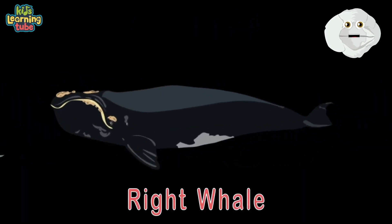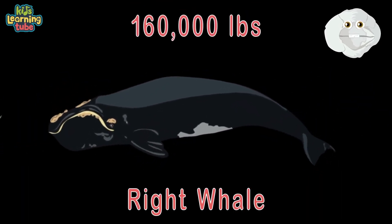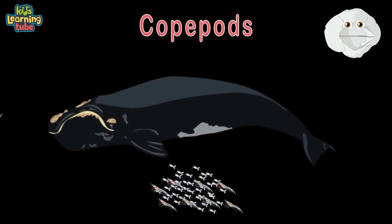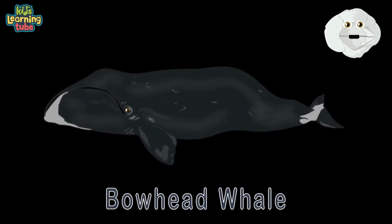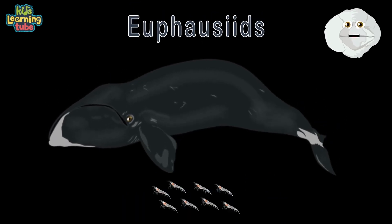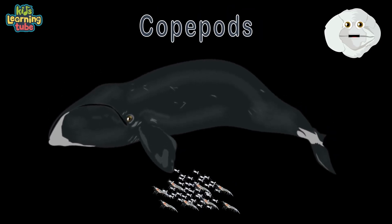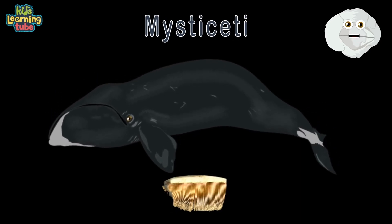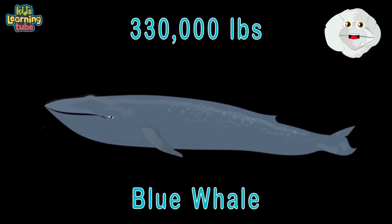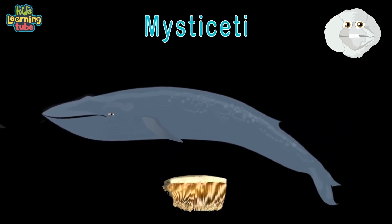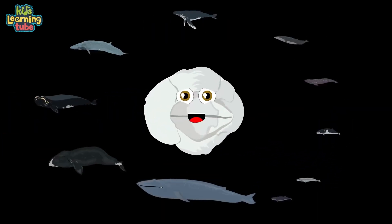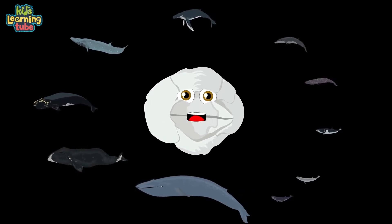Here's the right whale — fifty-nine feet long and 160,000 pounds. They feed on euphausiids and copepods, filtering through baleen as Mysticeti. Here's a bowhead whale — fifty-nine feet, 220,000 pounds — with euphausiids and copepods as their main diet. The blue whale is one hundred feet long, 330,000 pounds, eating four tons of krill daily. They're all Mysticeti.